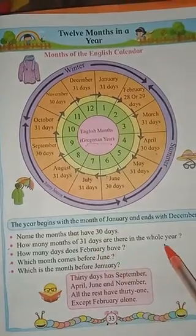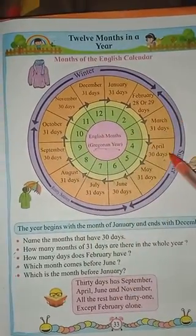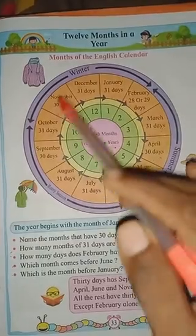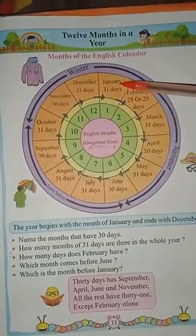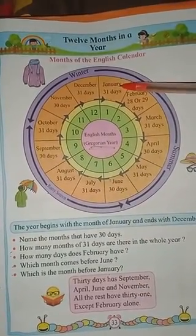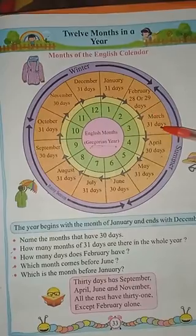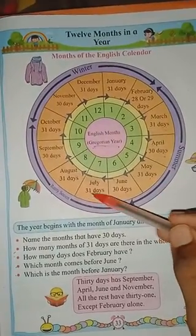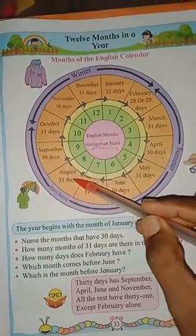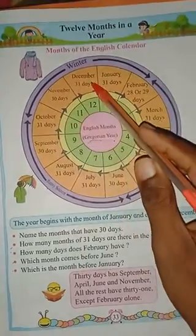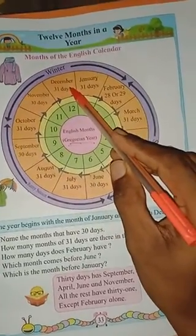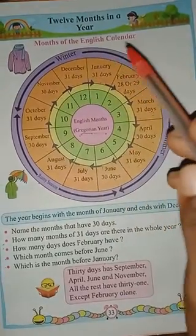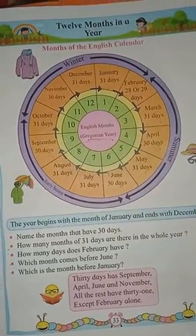How many months have 31 days in the whole year? Overall, we have seven months with 31 days in a whole year.